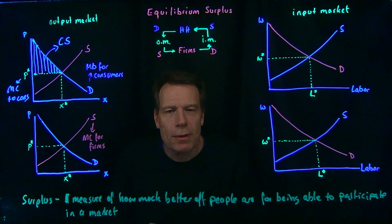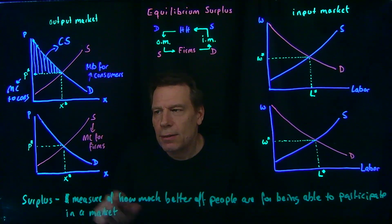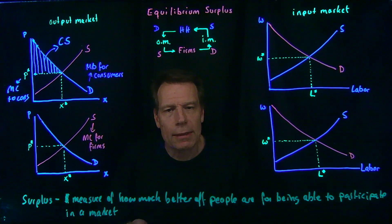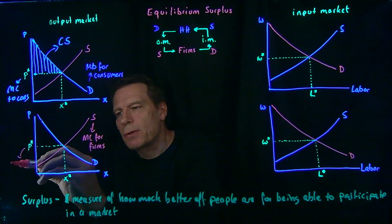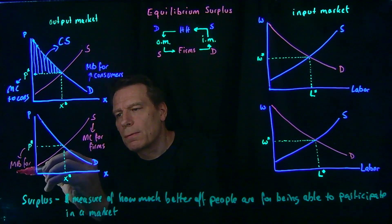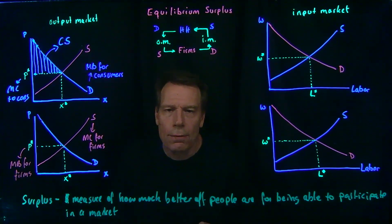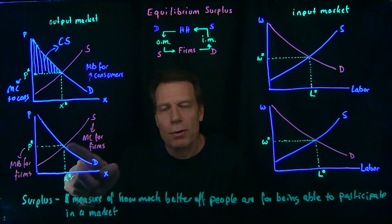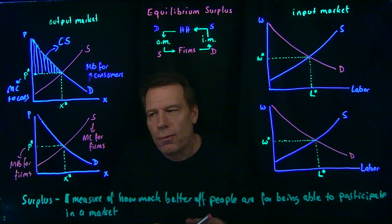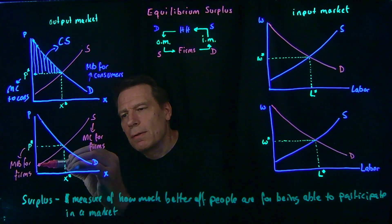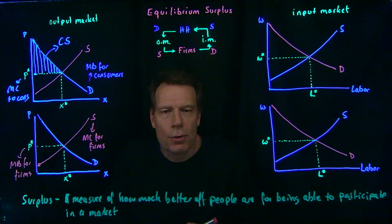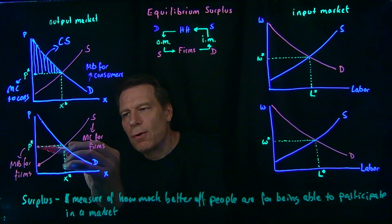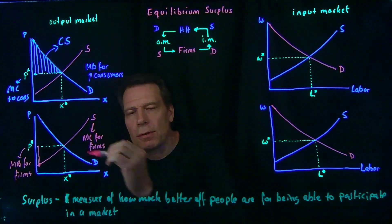Where is the marginal benefit for firms? Firms get to sell their products and collect the price — that price is the marginal benefit. For each good they sell, they get to collect that price. Firms continue to produce so long as the marginal benefit (the price) is larger than the marginal cost. There's some firm willing to produce that first good for this amount — that's that firm's marginal cost — but they get to sell it for this amount, so that firm is making a marginal profit on that first good of that vertical distance.